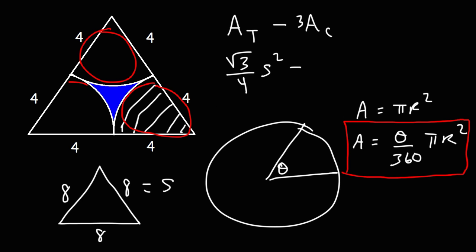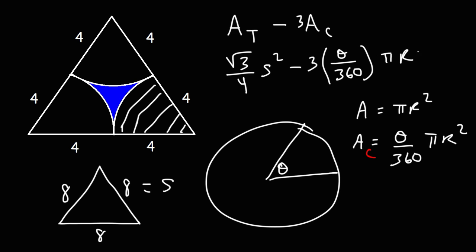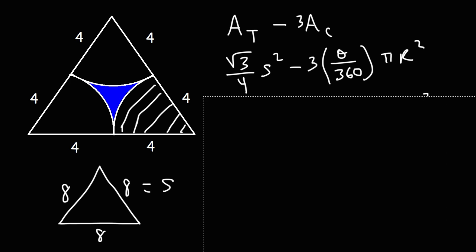So this formula highlighted in red will give us the area of just one sector of a circle. We have three sectors so we're going to multiply it by 3. So this would be A_c, the area of just one sector of a circle: 3 times theta over 360 times pi r squared. At this point we have everything that we need to get the answer. We just need to do the work.